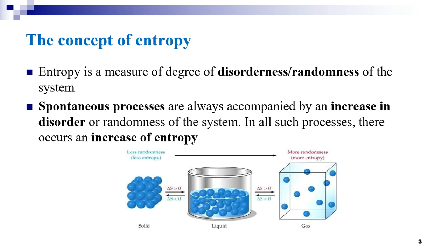You have come across state variables such as temperature, pressure, and volume in previous discussions about kinetic theory as well as thermodynamics. These state variables can be measured directly, but entropy is another special kind of state variable which cannot be measured directly; however, the change in entropy can be measured. In the figure, you can observe the three states of matter are shown and the arrangement of the molecules.